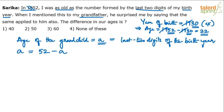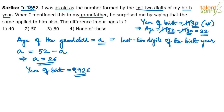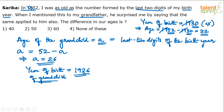So a = 52 − a, which implies 2a = 52, so a = 26. This means the year of birth is 1926. Quick verification: if born in 1926, in 1952 the age is 26, and the last two digits of the birth year are also 26 — the equation is satisfied. The year of birth of the grandchild is 1926, and the first condition is satisfied.